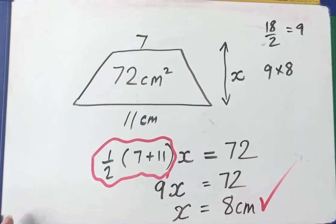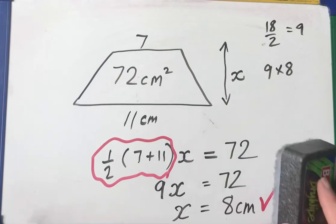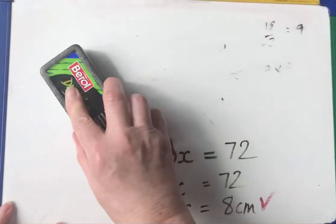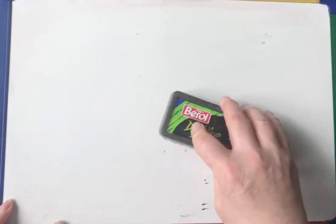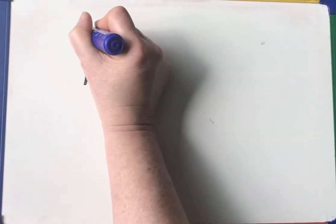Right. I'll do one more example and then you can have a go at some by pausing the video. Have a calculator handy. Don't let your lack of confidence in your times tables hold you back from actually doing these questions. You can work on your times tables separately, but just make sure you get the method.